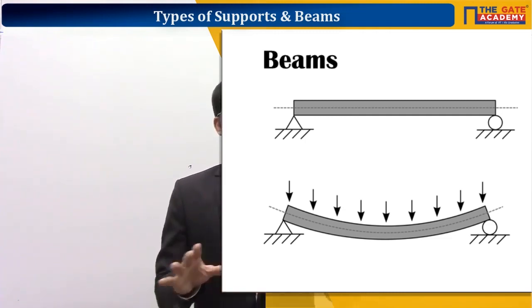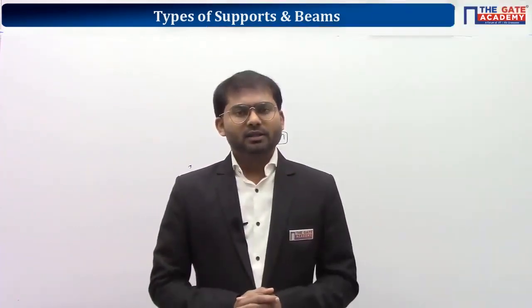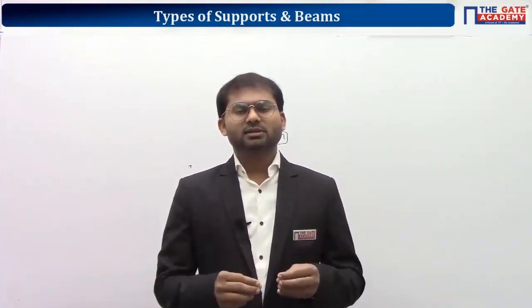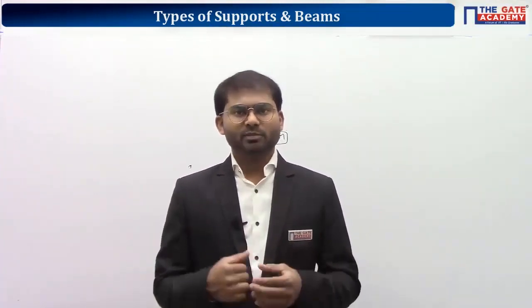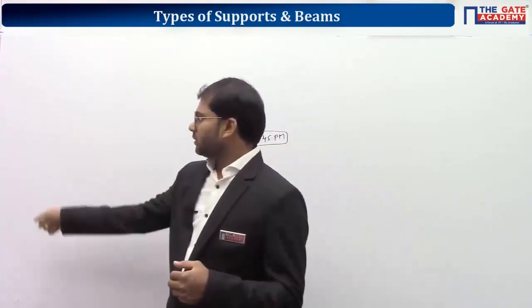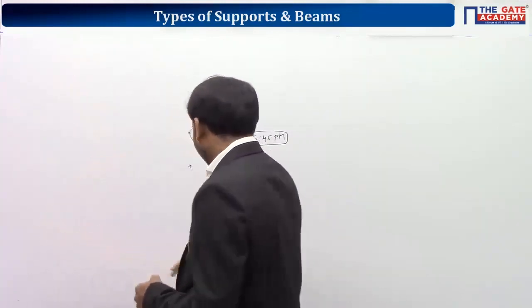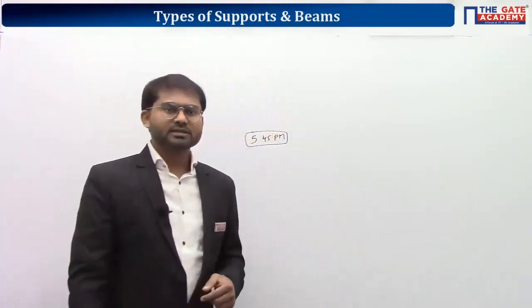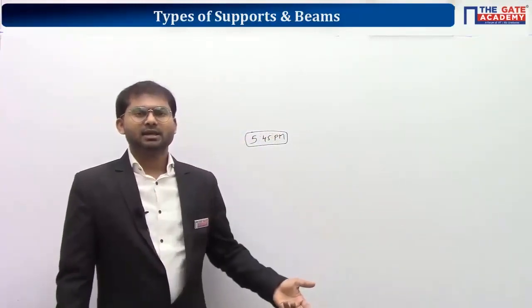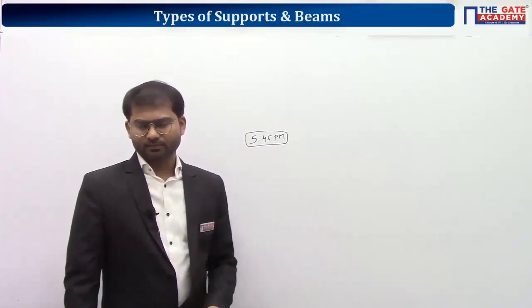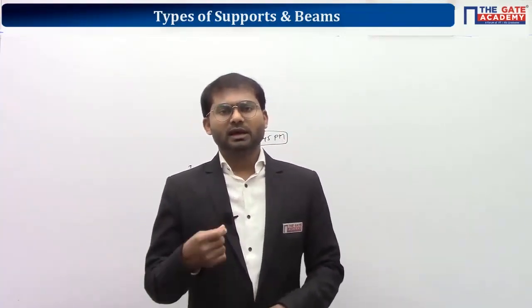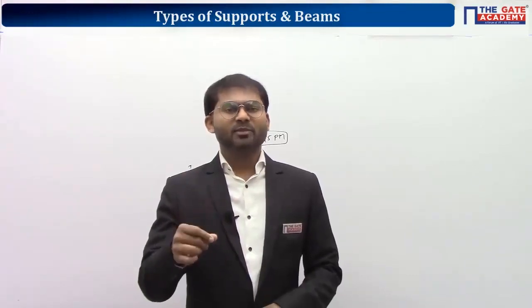Longitudinal direction means the axis or direction along the longest dimension. For example, take the board — it has breadth, height, thickness into the wall, and length. The longest dimension is along that length direction, so we call that the longitudinal direction. Please keep in mind: longitudinal direction means the axis along which the longest dimension is present.